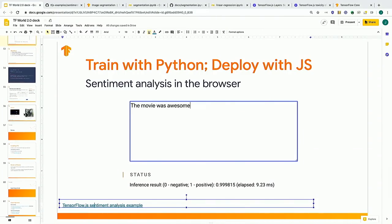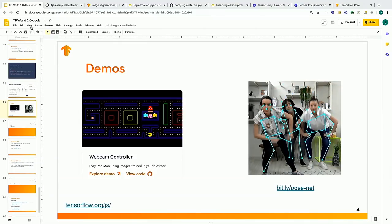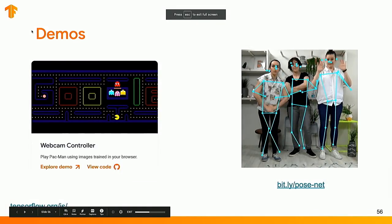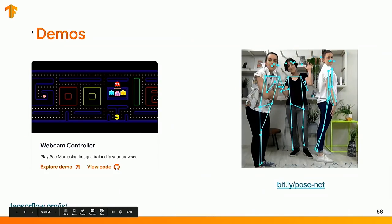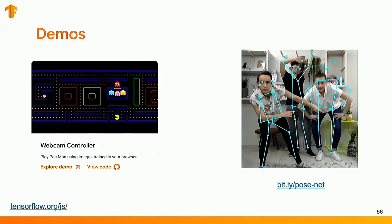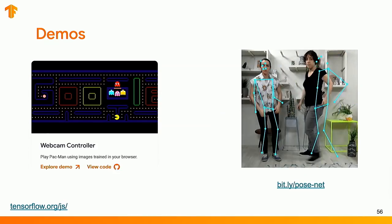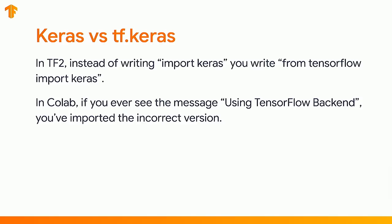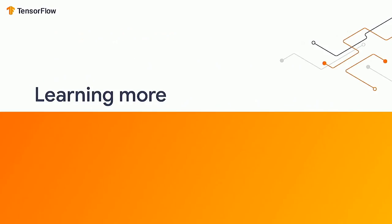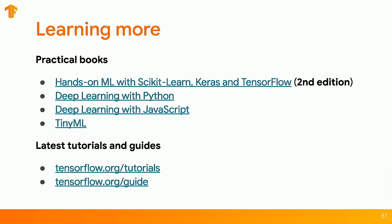If you're new to TensorFlow.js, by far the best demo is PoseNet at that link. There's also Pac-Man — you can control Pac-Man with your face, training a model live in the browser, which is awesome. One quick tip: if you're working in Colab and used to using Keras, don't import Keras directly. Instead, say 'from TensorFlow import Keras.' That gives you the TF2 version of Keras, which is a superset of regular Keras. If you ever see 'using TensorFlow backend,' you've imported the wrong version.